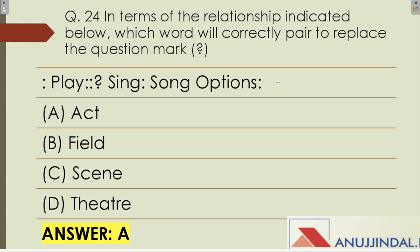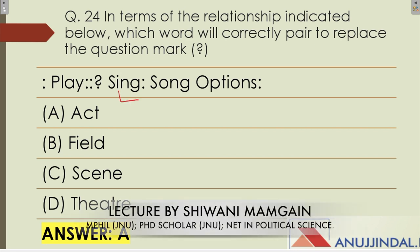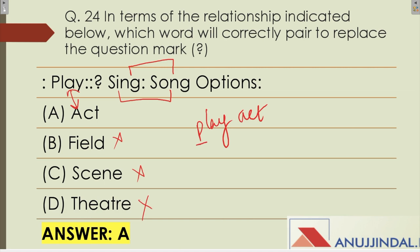Question twenty-four asks you to identify the word that correctly pairs to replace the question mark based on the given relationship. You need to find the relationship in the example given. Sing is to song — applying the same relationship, play is to act, which matches most closely. 'Field', 'scene', and 'theater' do not match. So play-act is the right answer.